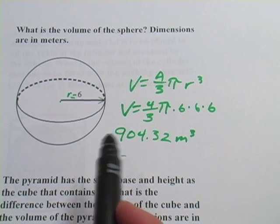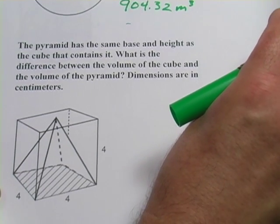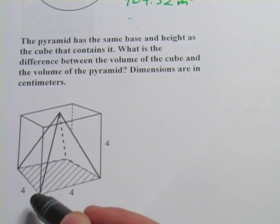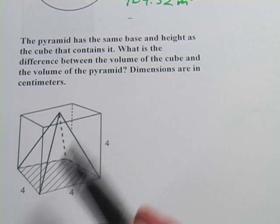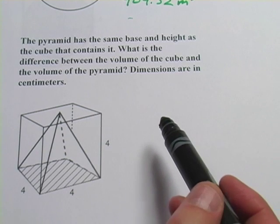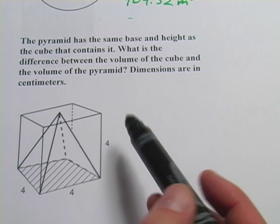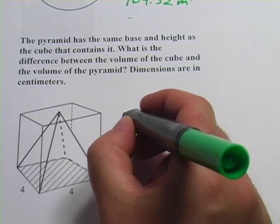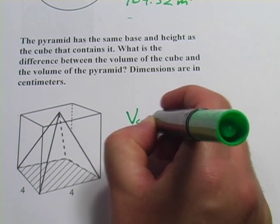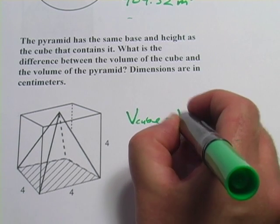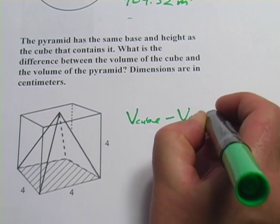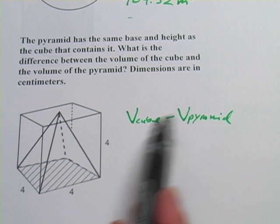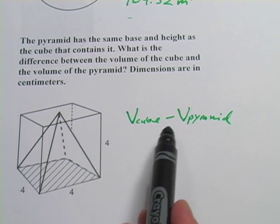That's a pretty big sphere. Now this next one gets even trickier. We have a square-based pyramid inside a cube. The problem says the pyramid has the same base and height as the cube that contains it. What is the difference between the volume of the cube and the volume of the pyramid? So it would be the volume of the cube minus the volume of the pyramid.